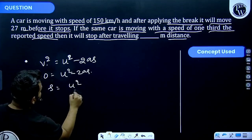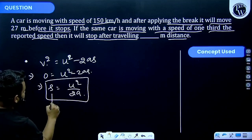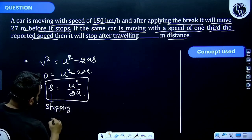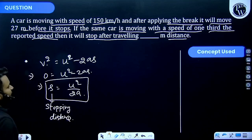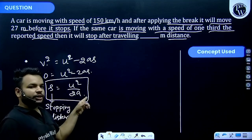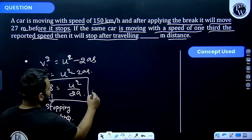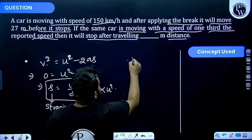s is a stopping distance. If acceleration is constant, you can say stopping distance is directly proportional to u². That means stopping distance 1 divided by stopping distance 2 equals (u1/u2)².